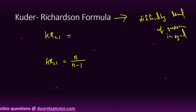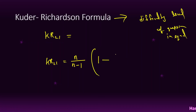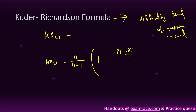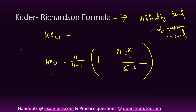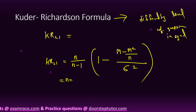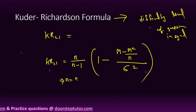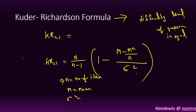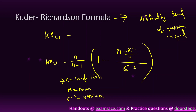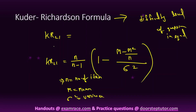The formula of KR-21 is: n divided by (n minus 1), into 1 minus m(M²) divided by n, divided by sigma square. Here n is the total number of items, m is the mean, and sigma square is the variance.